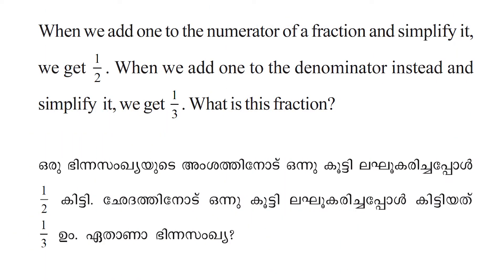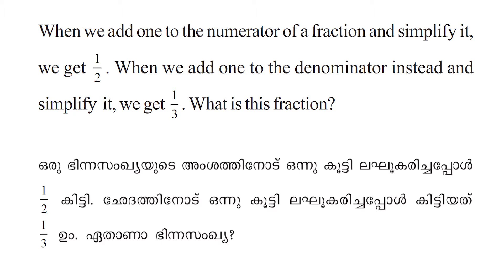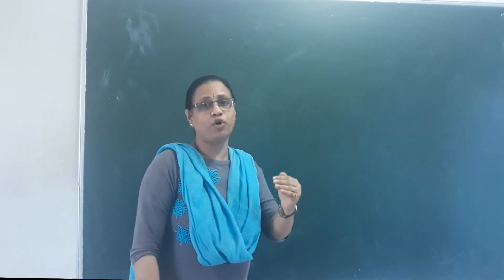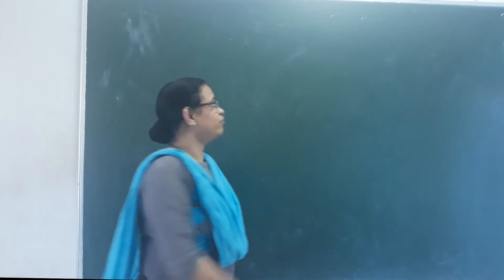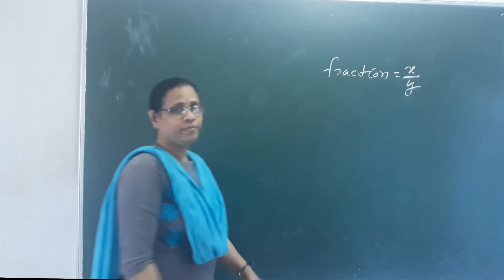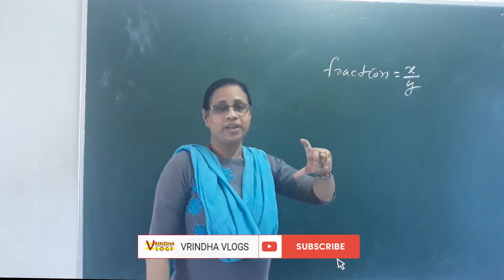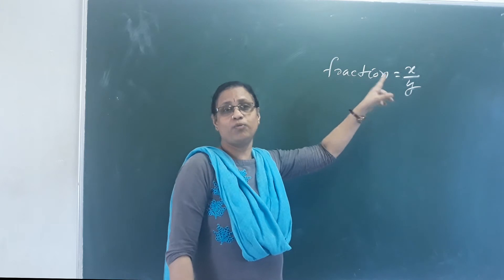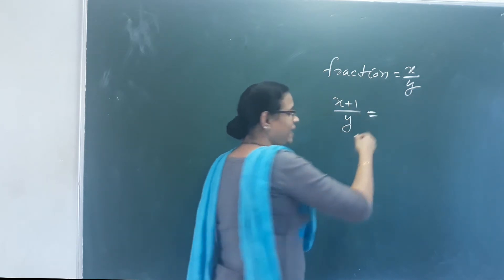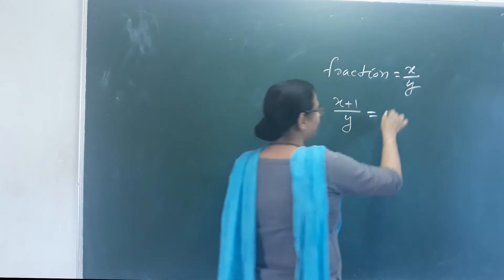When we add 1 to the numerator of a fraction and simplify it, we get 1 by 2. When we add 1 to the denominator instead and simplify it, we get 1 by 3. What is this fraction? Fractions are in the P by Q form. We call the fraction X by Y. We add 1 to the numerator: X plus 1 over Y. If we simplify it, we get 1 by 2.